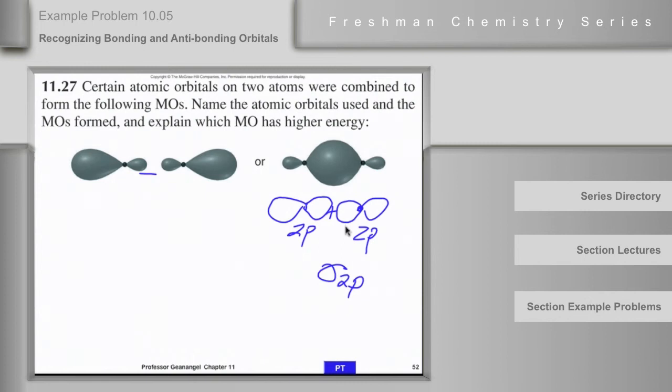Now that's going to be pretty stable, because the overlap is strong. So it's going to be low in the energy diagram.